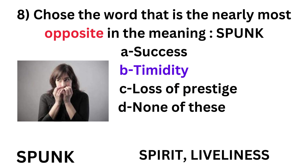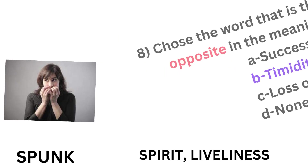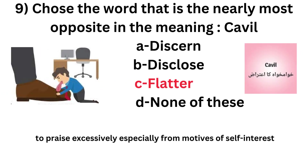The most opposite in meaning of 'spunk' is option B: timidity. Spunk stands for spirit or liveliness, so the opposite of spunk is timidity, option B. And the most opposite in meaning of 'cavil' — cavil means to criticize someone, to bash someone unnecessarily — so the opposite of cavil is option C: flatter, which means to praise excessively, especially from motives of self-interest.